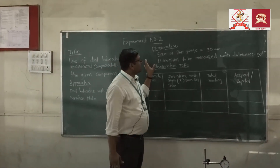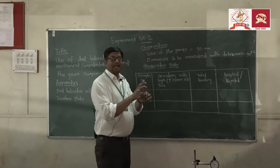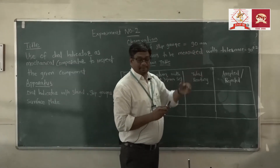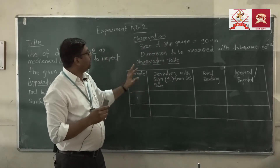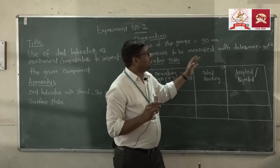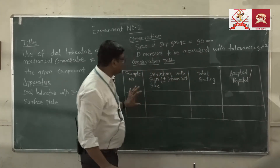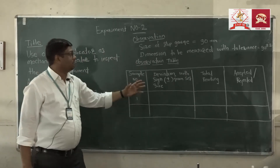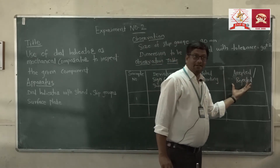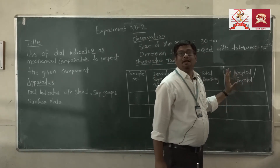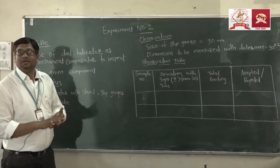In this experiment our basic size — our job size — is 90 mm. For that we take the 90 mm slip gauge. Now for the given job our tolerance limit is 90 ± 2 mm. For that we require the following observation table: the sample number, deviation with the basic size, total reading, and the result — whether it is accepted or rejected. Now let us take the actual performance of the given job.